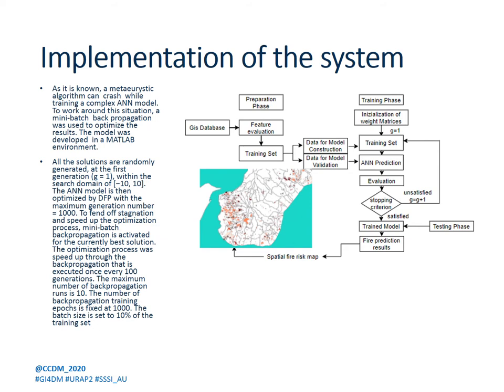As is known, a metaheuristic algorithm can crash while training a complex ANN model. To work around this, mini-batch backpropagation was used to optimize the results. The model was developed in a MATLAB environment. All solutions are randomly generated. The optimization process was sped up through backpropagation, executed once every 100 generations. The maximum number of backpropagation runs is 10, the number of training epochs is fixed at 1000, and the batch size is set to 10% of the training set.